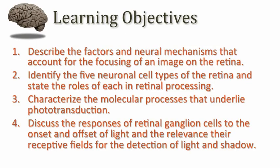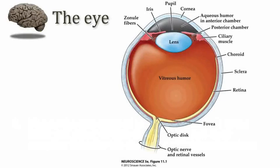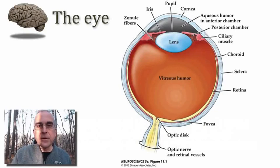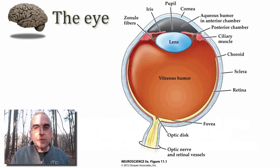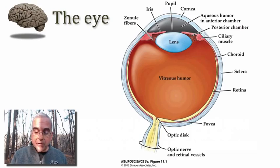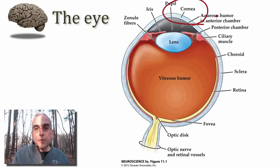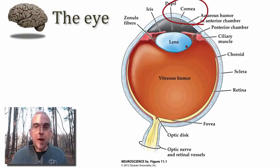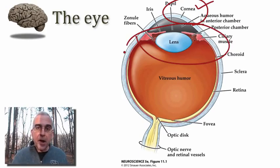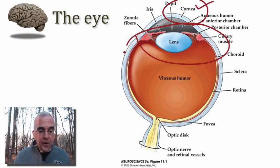Let's begin by looking at the anatomy of the eye. The eye is comprised of several layers and two chambers, and some structures important for forming a sharply focused image on the retina. On the anterior side of the eye, we have the cornea, which is responsible for most of the refraction of light — roughly 80% of the refractive power of the eye. The remaining 20% comes from structures near the anterior third of the eye, including an optical lens that can change shape through a process called accommodation.